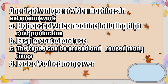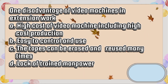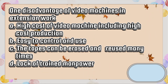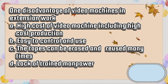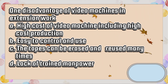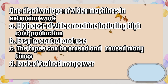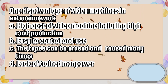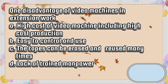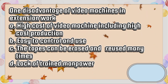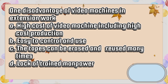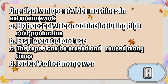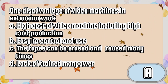One disadvantage of video machines in extension work. A. High cost of video machine including high cost of production. B. Easy to control and use. C. The tapes can be erased and reused many times. D. Lack of trained manpower. The answer is letter A.